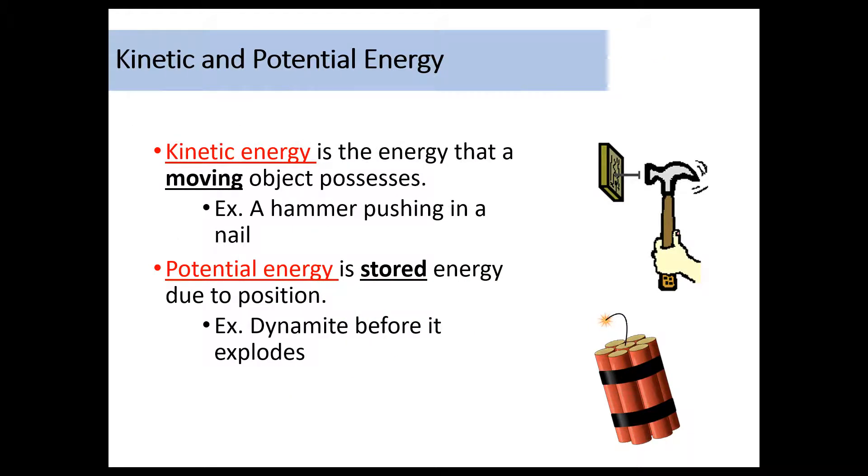So kinetic energy, just a reminder, this is the energy that a moving object possesses. So if I am physically hammering in a nail and I'm moving, then I have kinetic energy. Potential energy is what we call stored energy. And this is stored due to position. So this could be a battery that's not in use. Or this could be when you pull back on an elastic band and you just hold it. Or like in the example on this screen, this could be dynamite before it explodes because we know when it explodes, there's some radiant energy, some thermal energy, some sound energy, some chemical energy. But right before it explodes, it has what we call potential or stored energy.